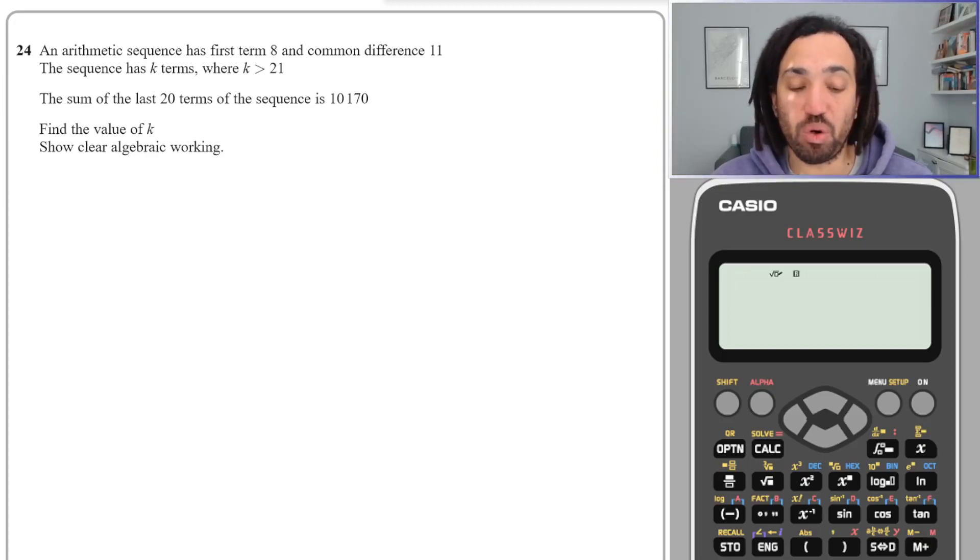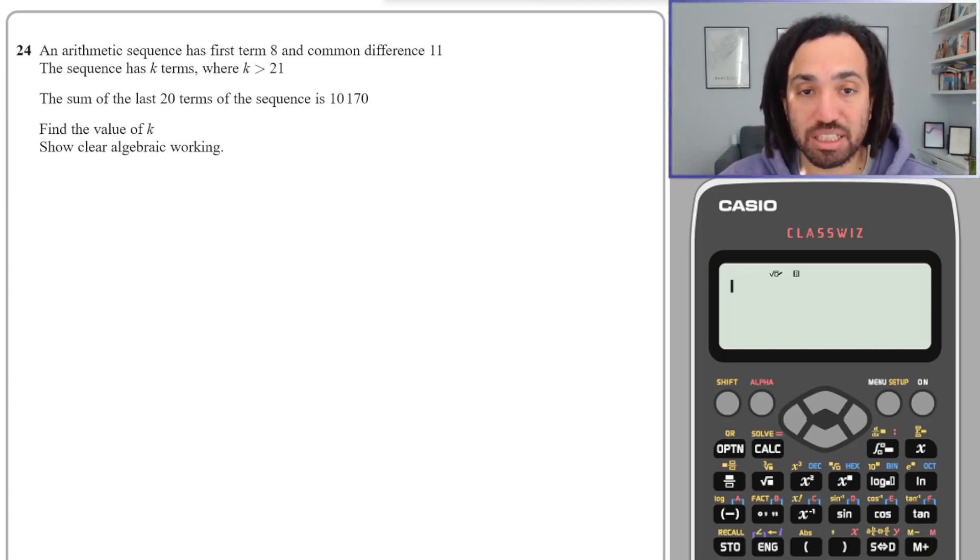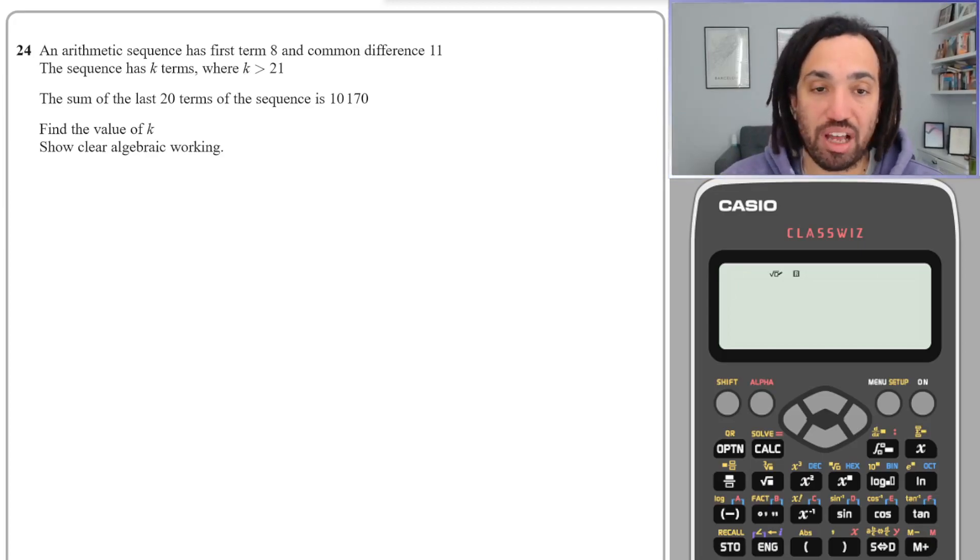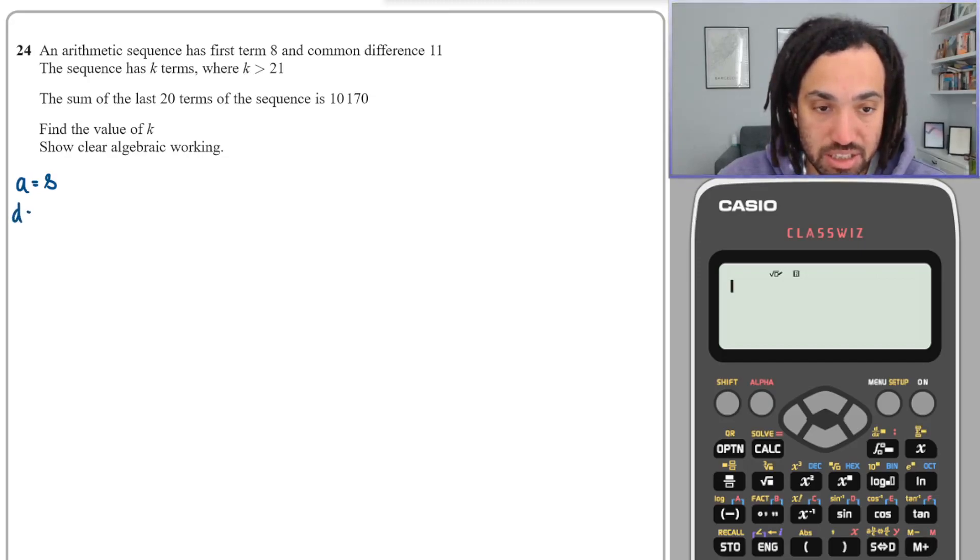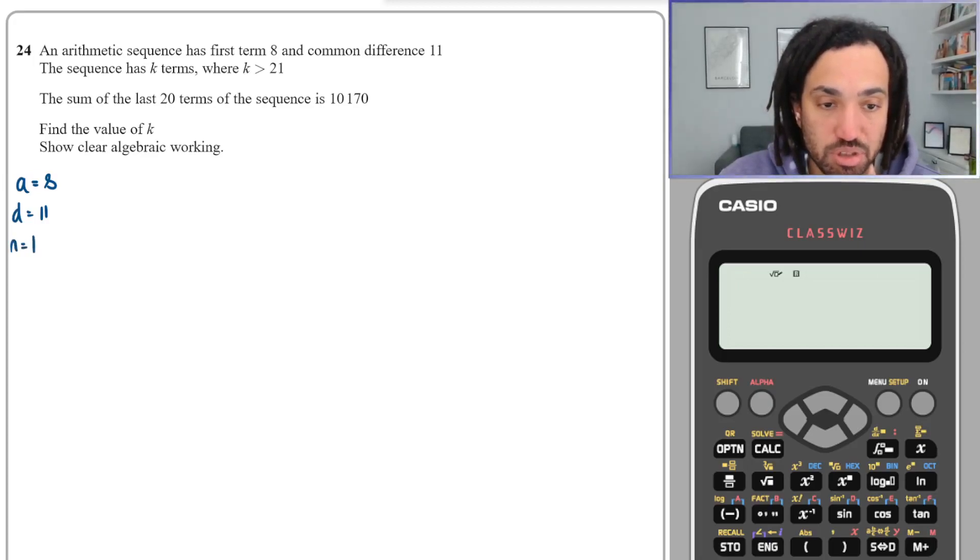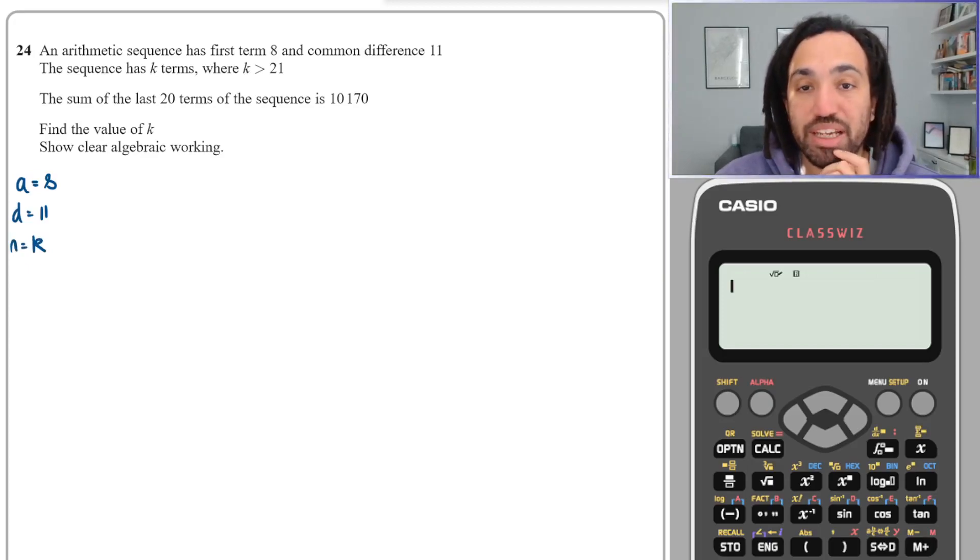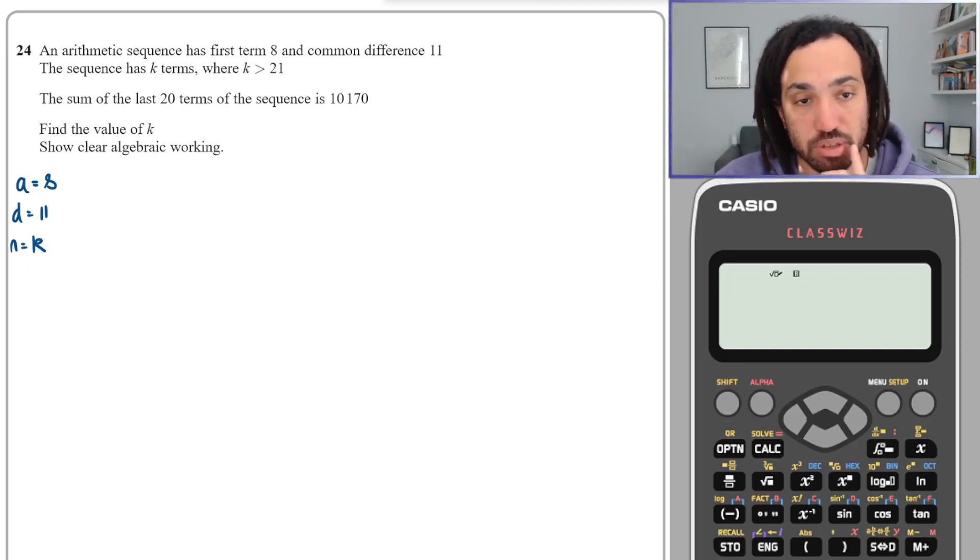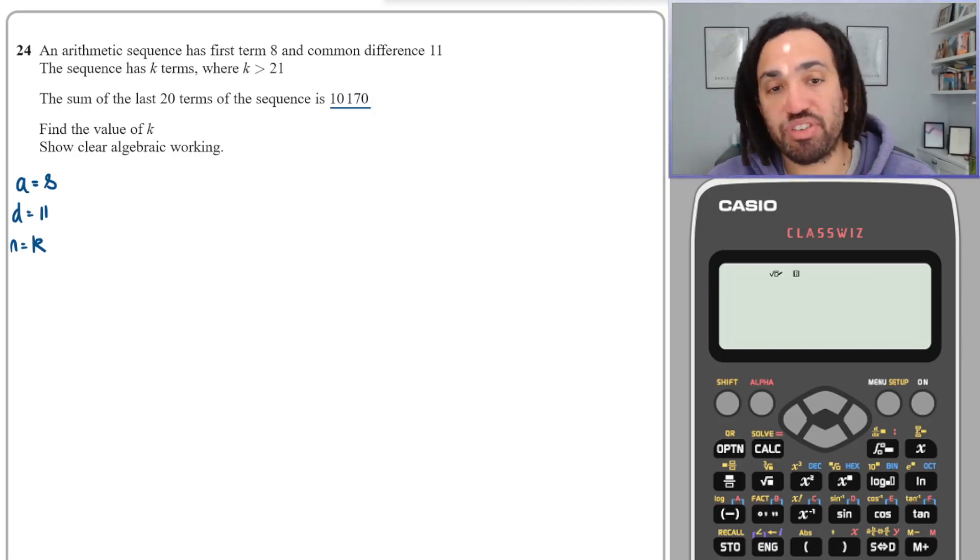This is question 24 and it says an arithmetic sequence has first term of 8, so I know that a equals 8, and it has a common difference of 11, so d equals 11. The sequence has k terms, so n equals k, where k is greater than 21. The sum of the last 20 terms of the sequence is 10,170. Find the value of k.